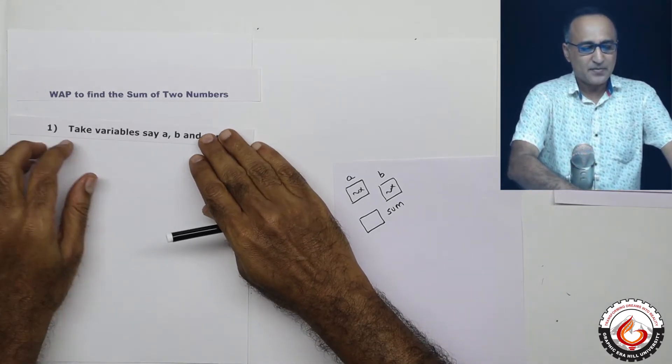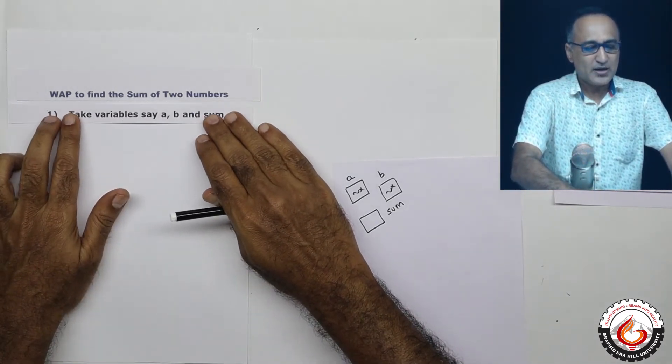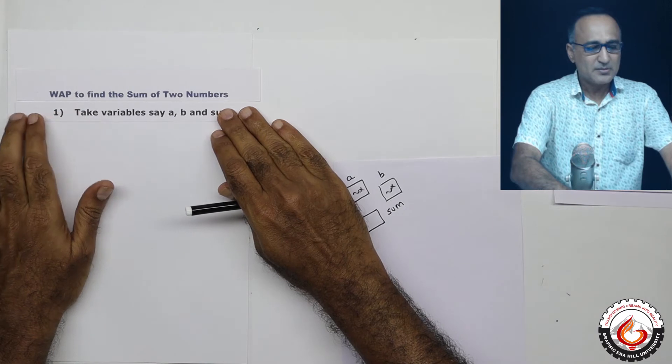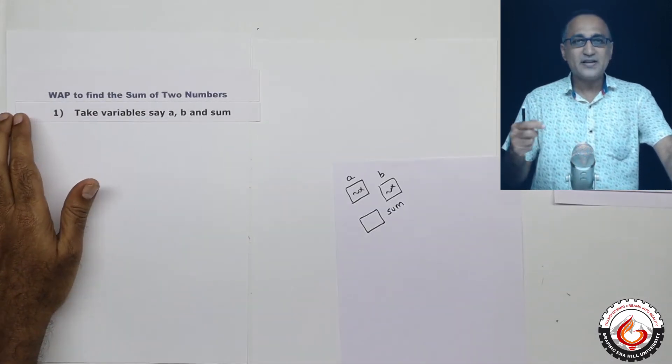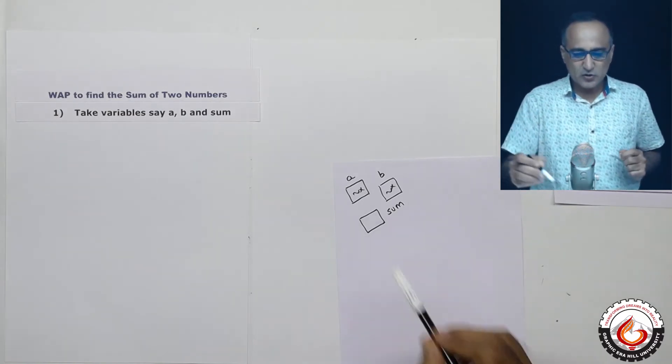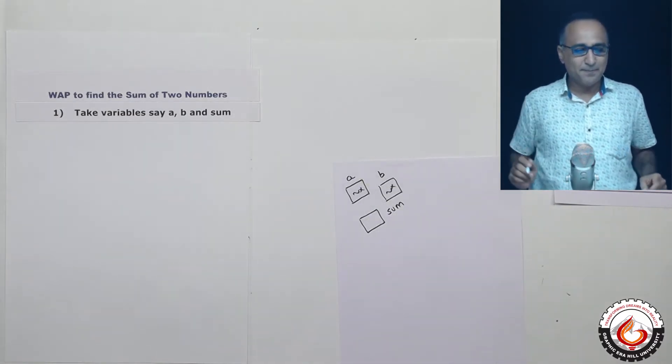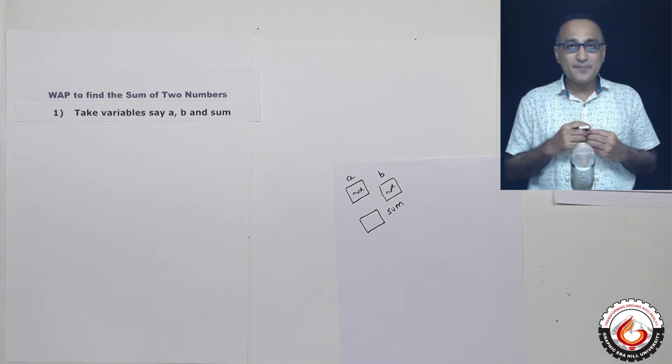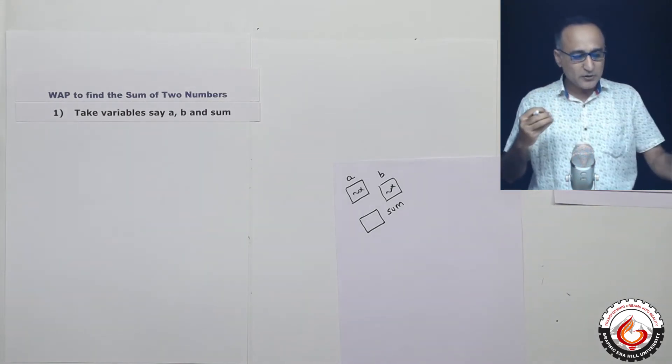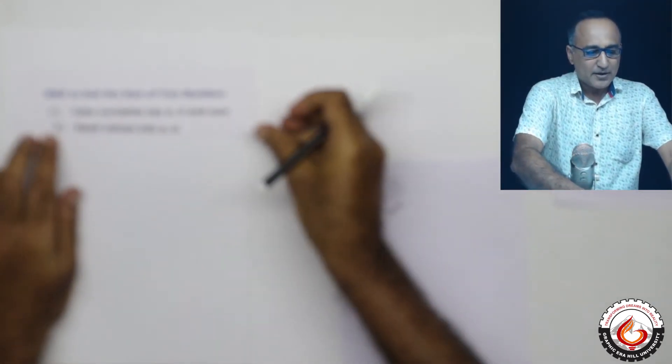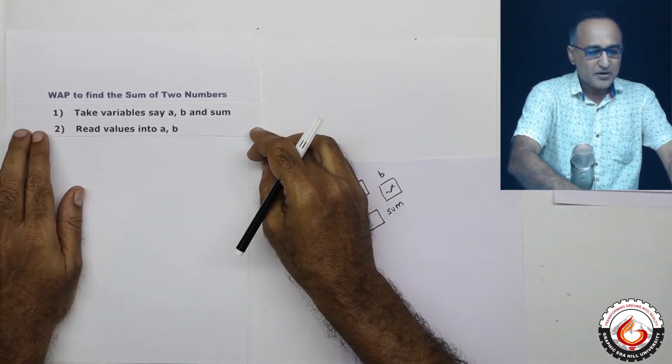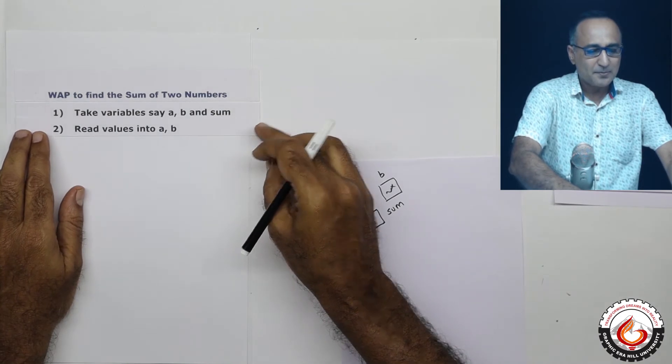So the first step I am going to say take the variables a, b, and sum. Variables are quantities which can change. So this is a, b, and sum. Now what did I tell you? The next step I am going to read values into a and b. So at this step what I am trying to do is read values into a and b.